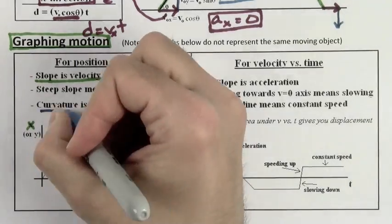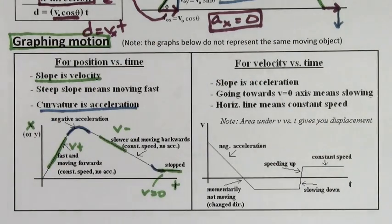Any changes in slope on a position versus time graph means there's acceleration. Curvature is an obvious sign of acceleration.